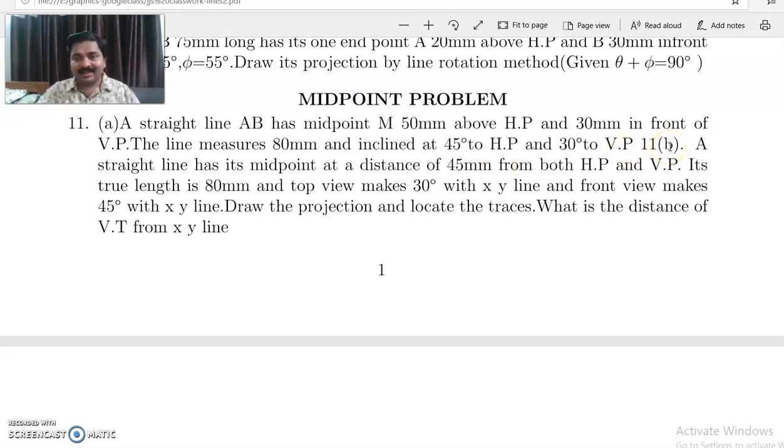Question number 11B is again a midpoint problem. A straight line has its midpoint at a distance of 45mm from both HP and VP. Its true length is 80mm and top view makes an angle 30 degrees with XY line and the front view makes an angle 45 degrees with XY line. Draw the projection and locate the traces. What is the distance of the VT from XY line?